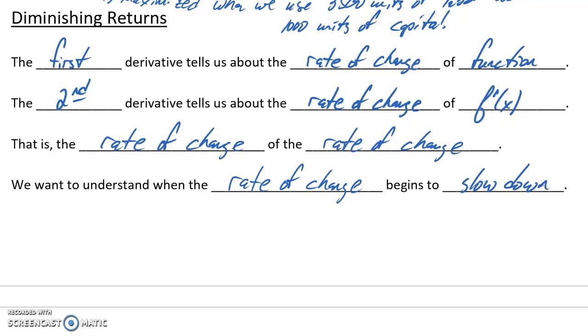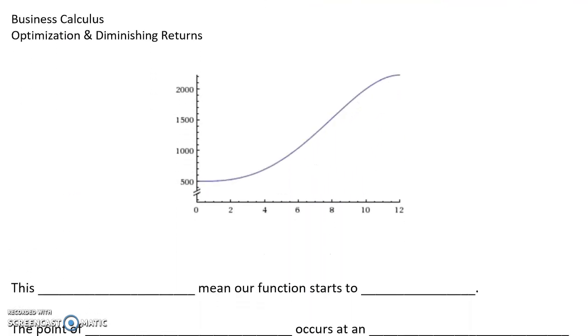So when we talked about optimization for the single variable case, we were looking for when our function changed from increasing to decreasing. So our rate of change would shift from increasing to decreasing, or decreasing to increasing. That would give us a maximum or minimum. When we talk about this idea of diminishing returns, what we want to do is consider a curve and identify when that rate of change starts to slow down.